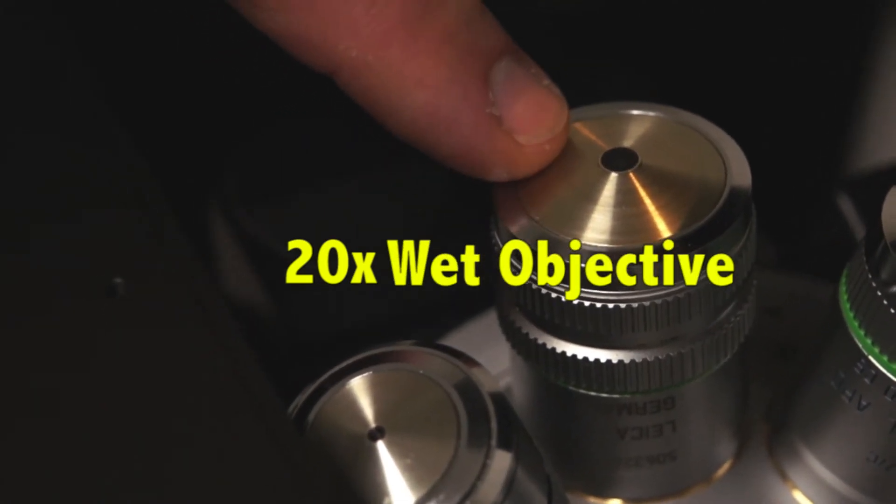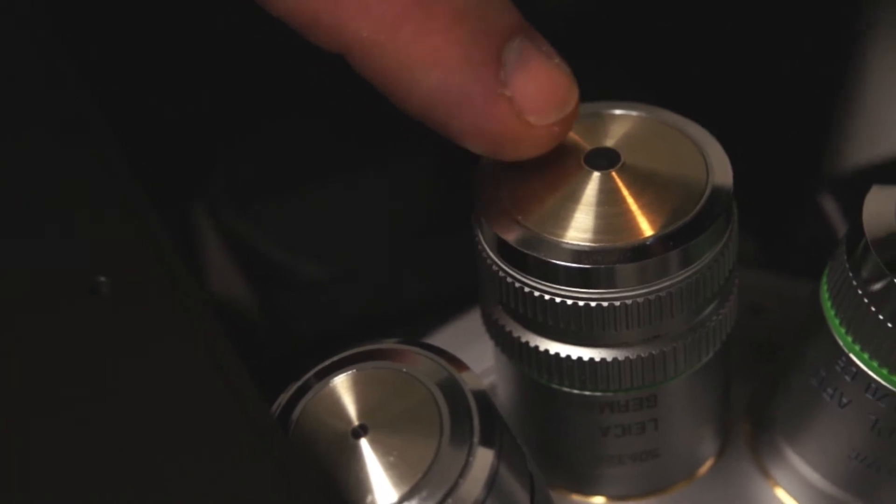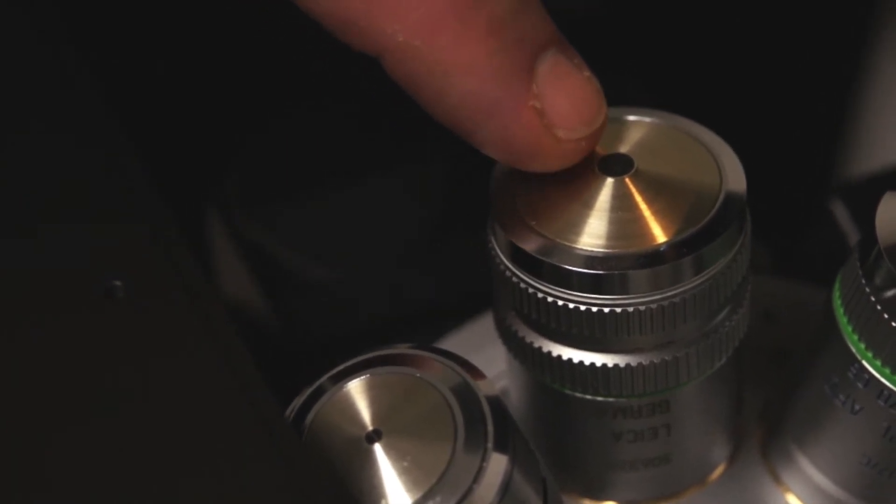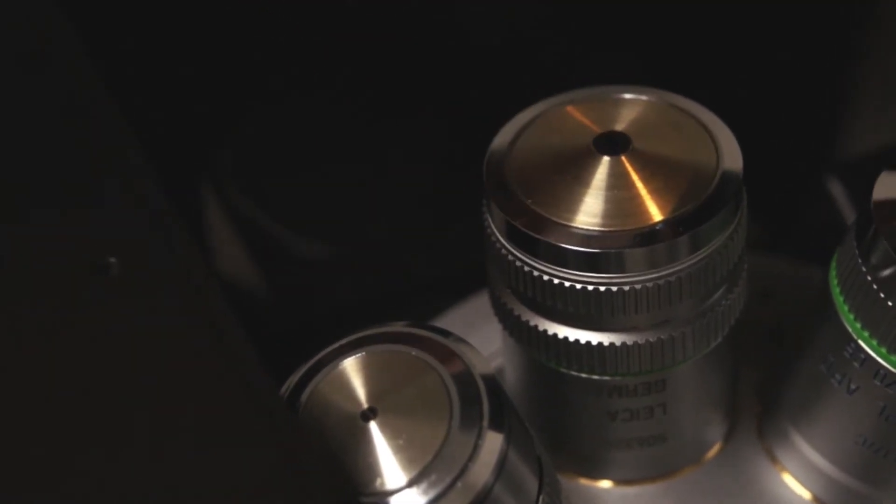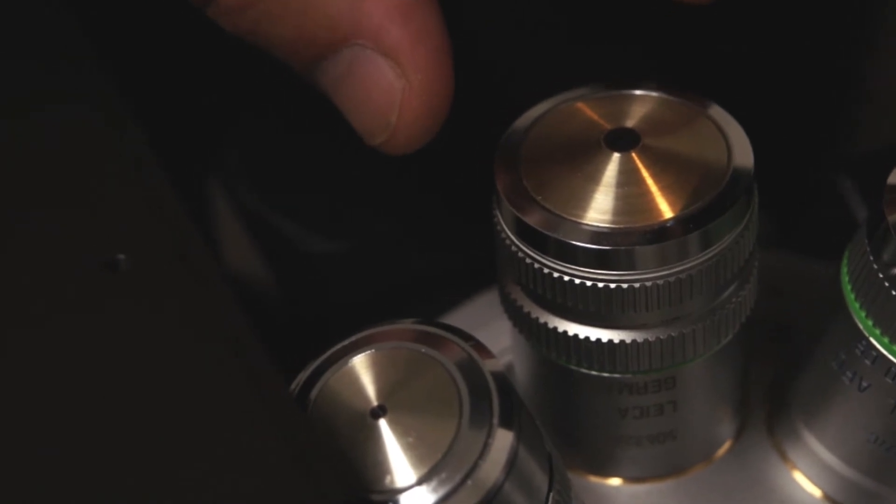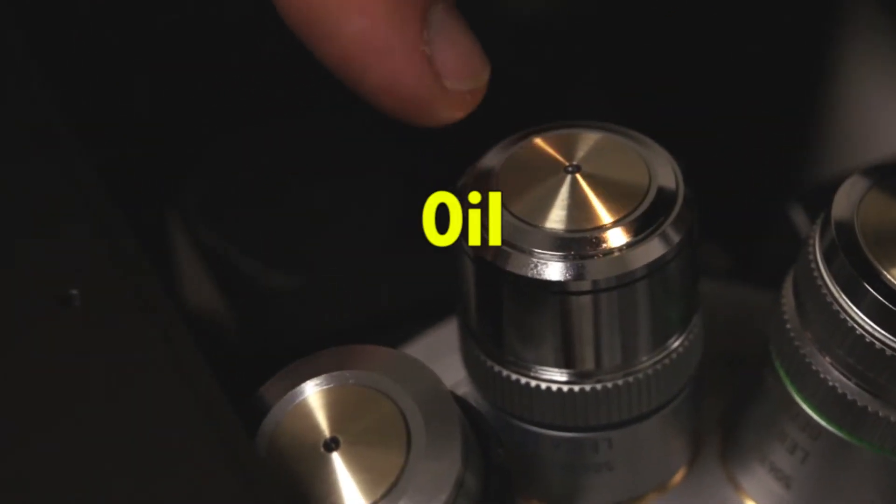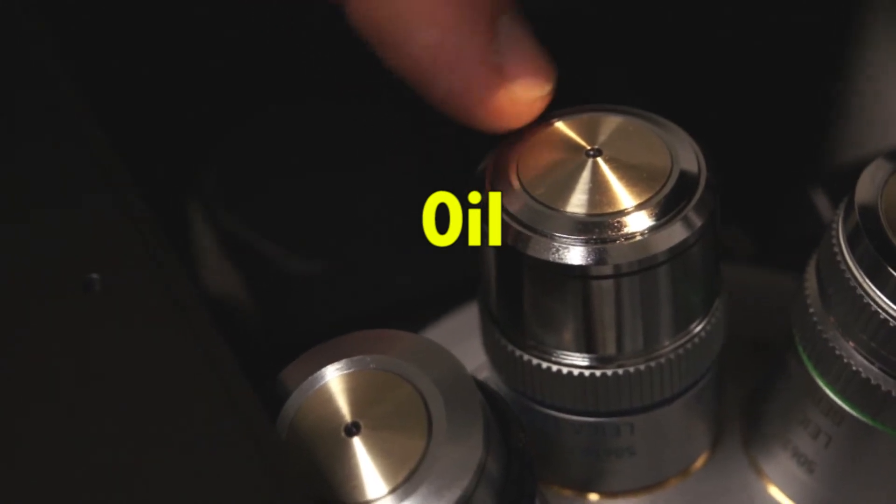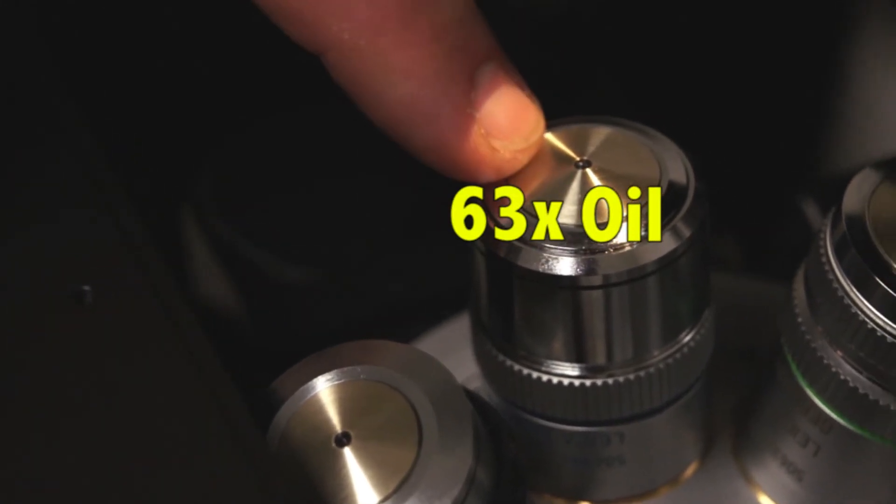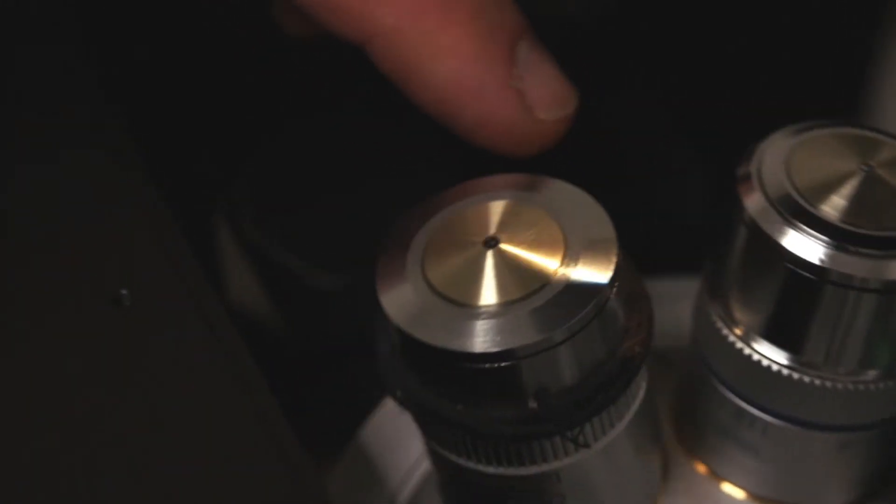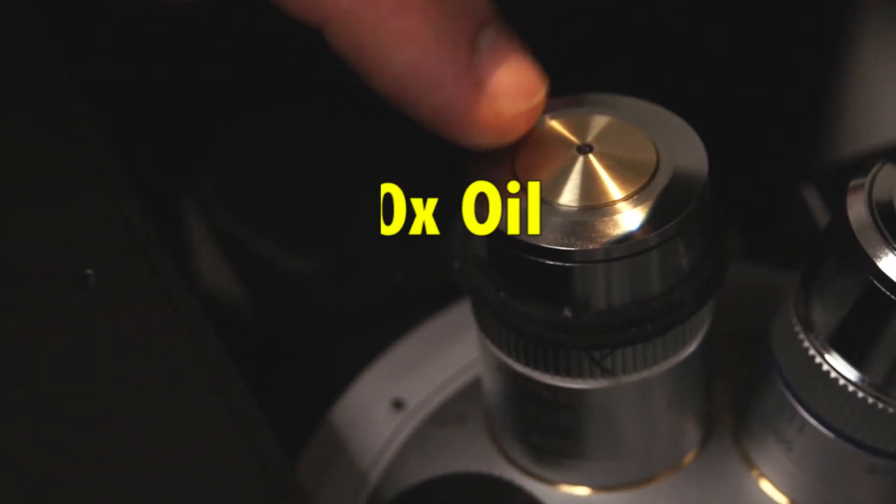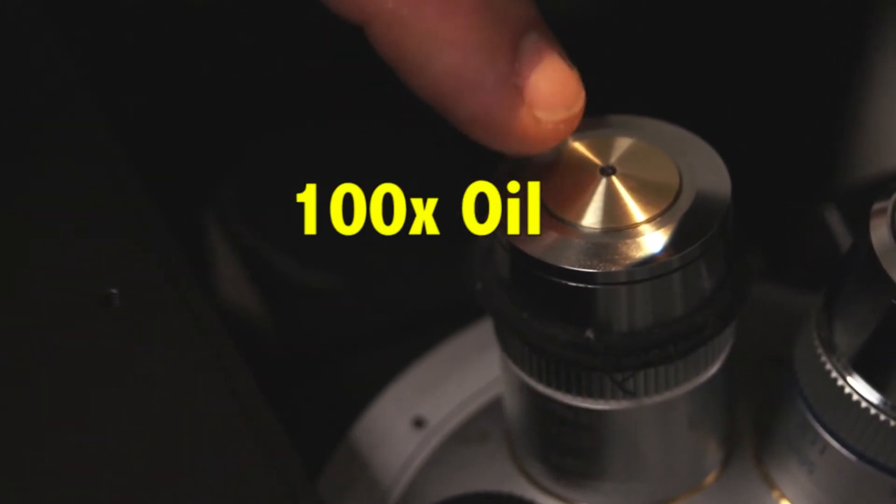Therefore, it is an immersion objective. So you would put a drop of oil on the front element of the lens before you put your slide down onto the objective. The fourth objective is another oil immersion objective. This is a 63x oil. And finally, the fifth objective is a 100x oil objective, also immersion.